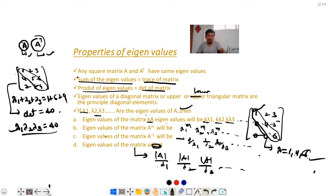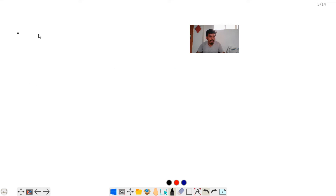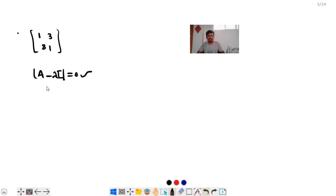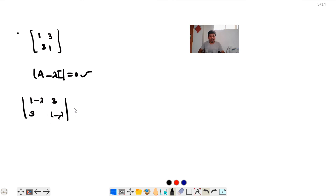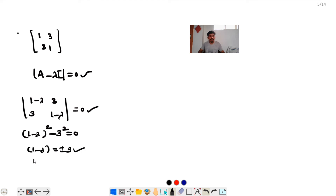Now I will explain how to find eigenvalues. For example, take the matrix [1, 3; 3, 1]. Using the eigenvalue equation |A − λI| = 0, we get the determinant: (1 − λ)(1 − λ) − 9 = 0, which gives (1 − λ)² − 3² = 0. Solving, 1 − λ = ±3, so λ = 4 and λ = −2.